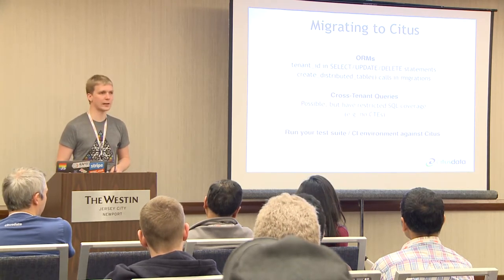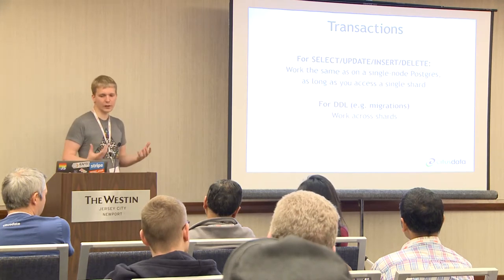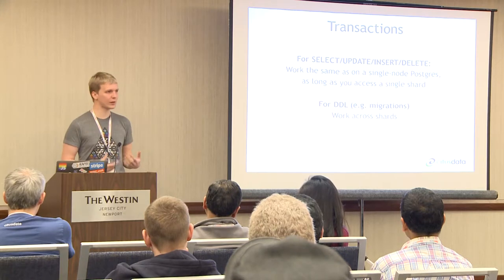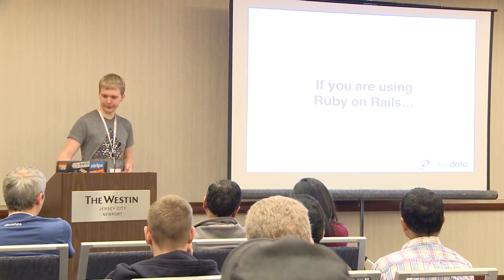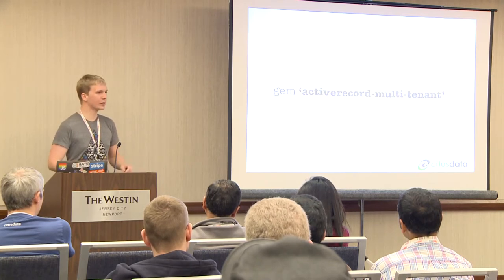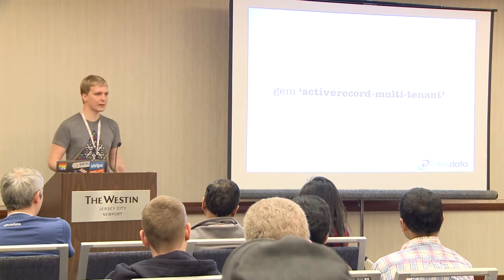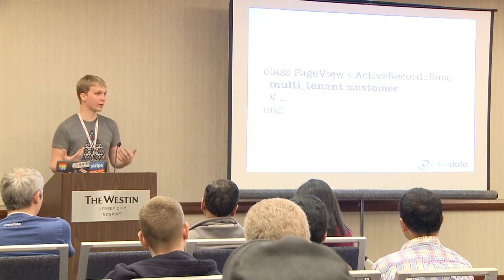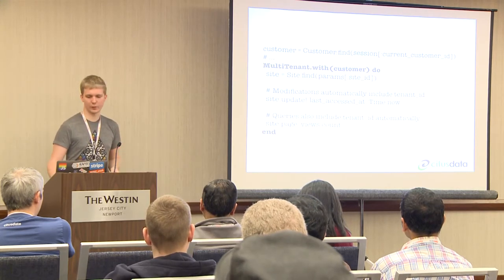A quick note on transactions: they work similarly to single-node Postgres, which is a big benefit for OLTP transactional workloads. DDL can also work across nodes. If you're using Ruby on Rails, I'm the author of a library called Active Record Multi-Tenant that makes all of this easier — just drop it in and it works. You add a multi-tenant annotation to every one of your models, say all operations are in the context of this customer, and the queries are modified automatically with the tenant ID added.